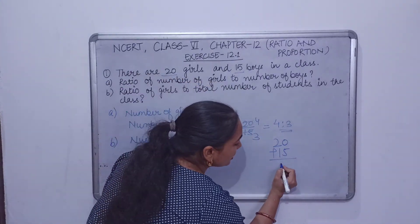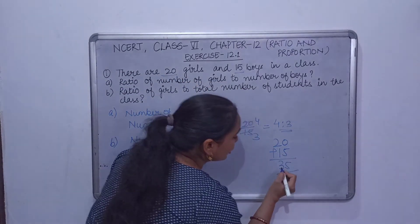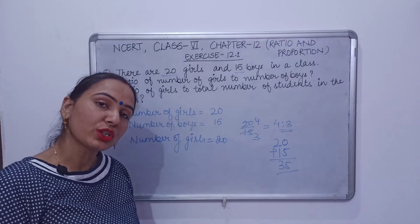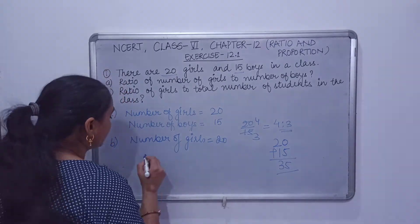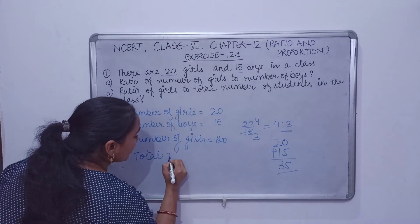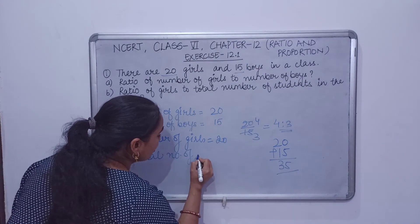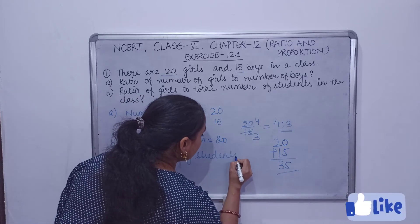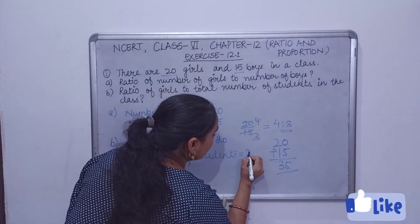So total number of students, how do we get? Out of the number of girls and the number of boys. Let's add them quickly. So this is our total number of students. Here we write here, total number of students, right? 35.